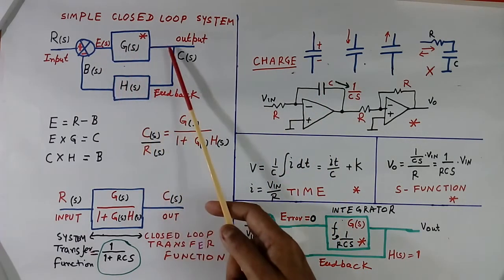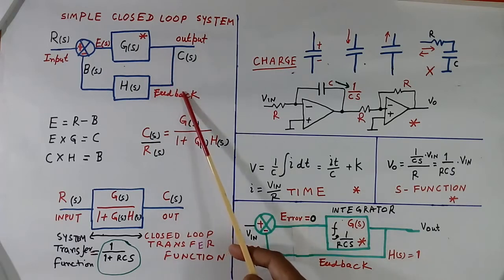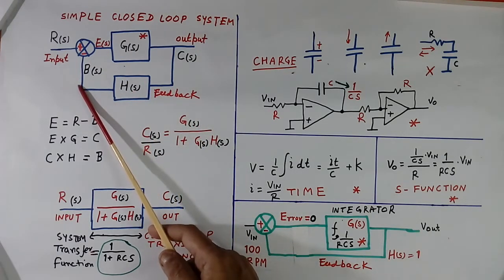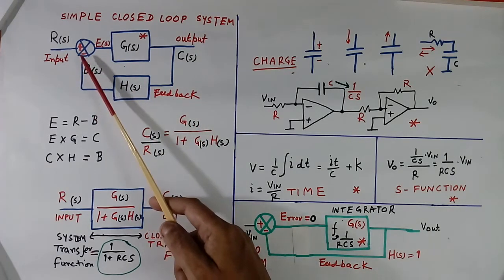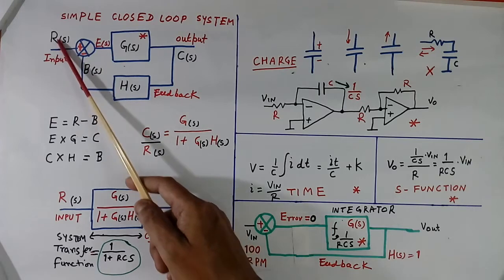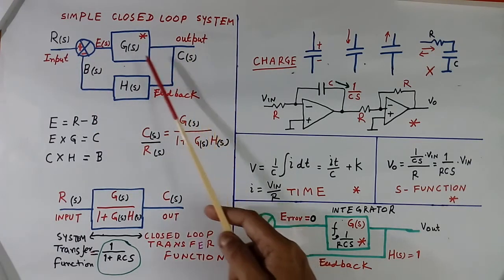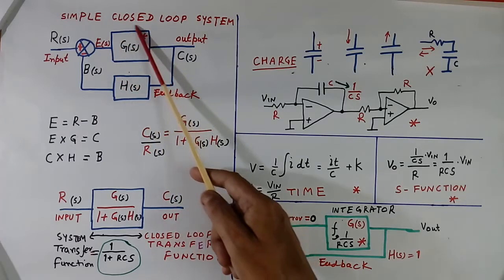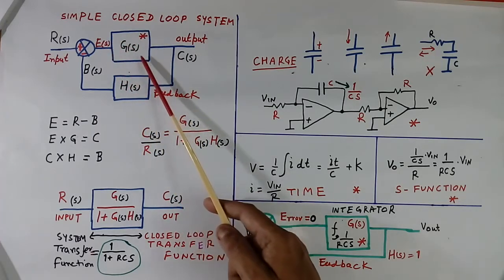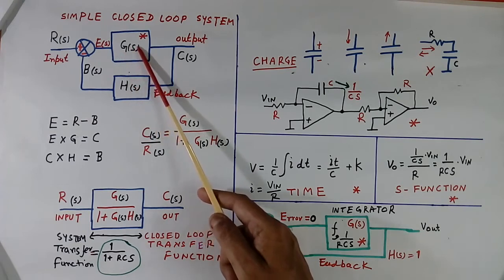Here, this is the forward path. This is the feedback path. And this is the plus-minus junction. R is the input and the output is written as C(S). G(S) means this is the transfer function of this block in S-function. S means just S-function — it is not a multiplication.